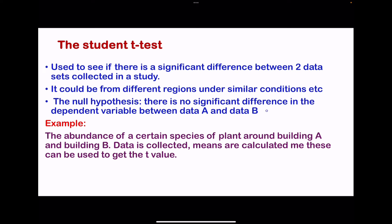For example, we could talk about abundance and distribution of organisms, such as plants around two buildings. So in this case, we can use the student t-test.